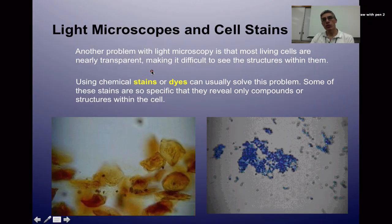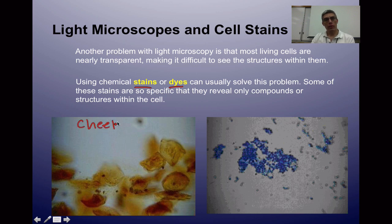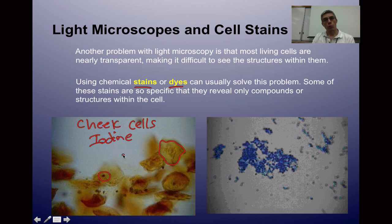When using light microscopes, it can be difficult to see certain specimens because they're almost transparent. So we add a stain or a dye. On the lower left you can see cheek cells that have been stained with iodine. Before staining, you really couldn't see anything, but after applying iodine the cell membrane and nucleus became clearly visible. On the right is another example of cheek cells using methylene blue stain. Stains and dyes can target specific cell parts, making them really pop when making observations.